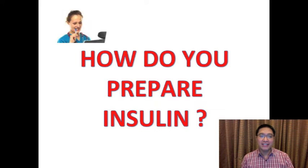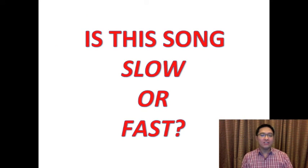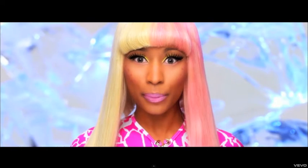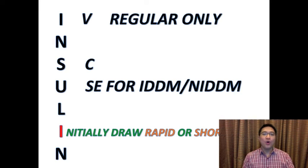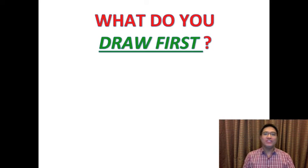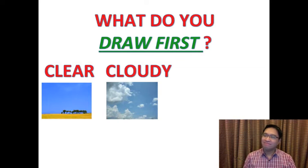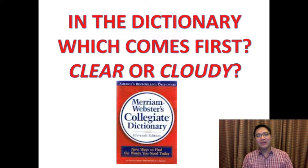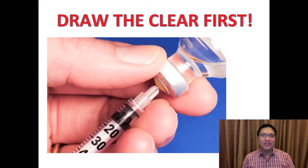How do you prepare insulin? What do you draw first — slow or fast? Initially, draw the fast-acting, rapid-acting, or short-acting insulin first. What do you draw first — clear or cloudy? In the dictionary, which comes first, clear or cloudy? Now you know the answer: draw the clear first.